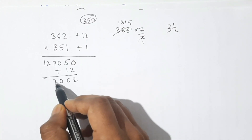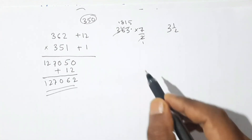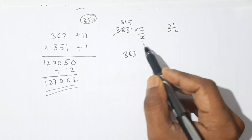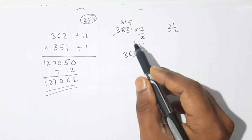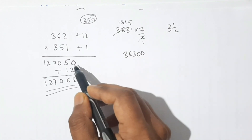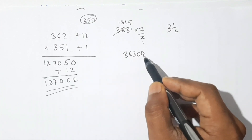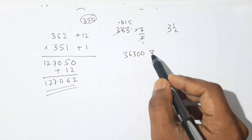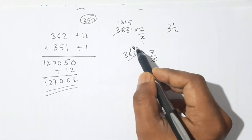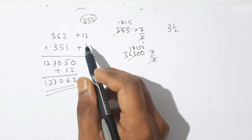To avoid a decimal when dividing 363 by 2, we place two zeros with 363 so it becomes an even operation. Multiplying 363 by 2 gives 181500 (×100), and multiplying by 7 gives the upper part. Adding the deviation product 12, our required product is 127072.